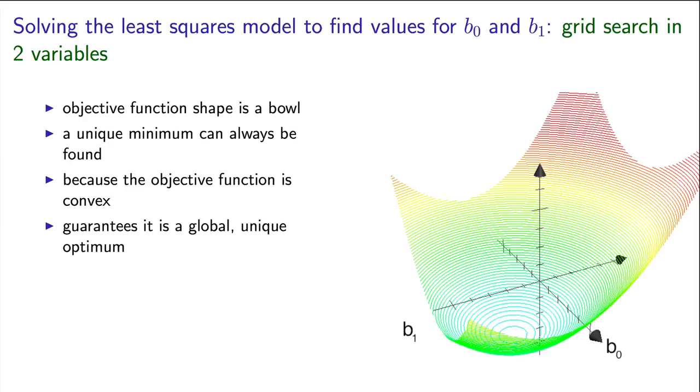Any data set that you try and fit a least squares model for, you will only find a single value of b0 and a single value of b1 that minimizes that objective function uniquely. That's good to have. We don't ever want different values of b0 and b1 for the same data set.